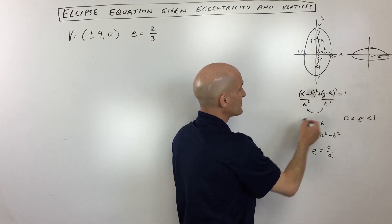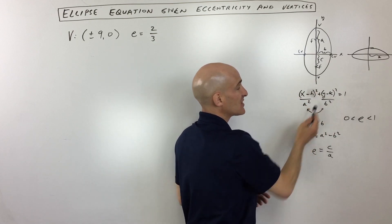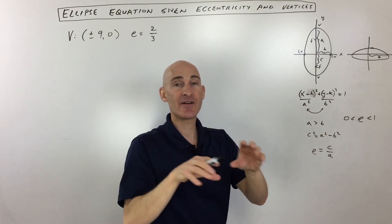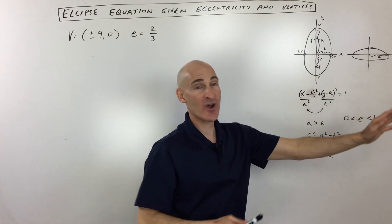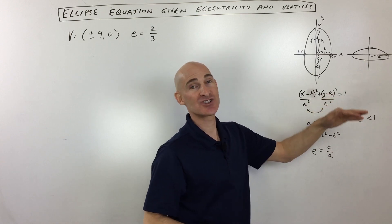And then the general form of the equation of an ellipse is this guy right here. Notice the h and the k picks up the graph and it shifts it left and right, up and down, but it has the opposite effect. So if it's x minus 2, you're actually shifting right two. If it's y plus 3, you're actually shifting down 3.